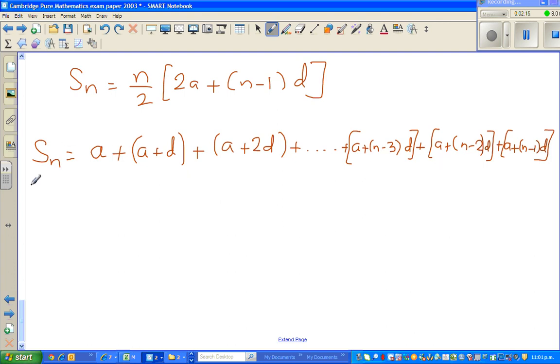If I want to write S_N again, I'm going to write this again, but in the reverse order. So, this will become, the reverse order will become A plus N minus 1 times D, plus the next term, from backwards, is A plus N minus 2 times D.